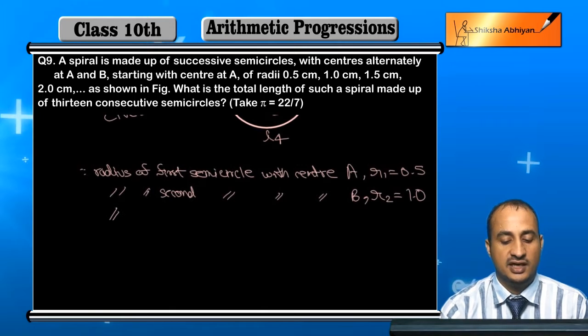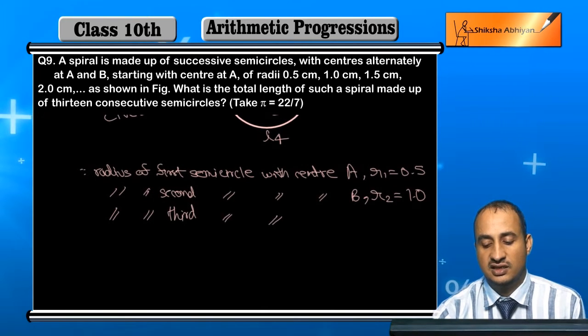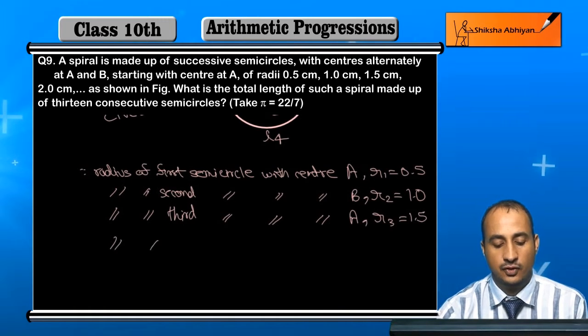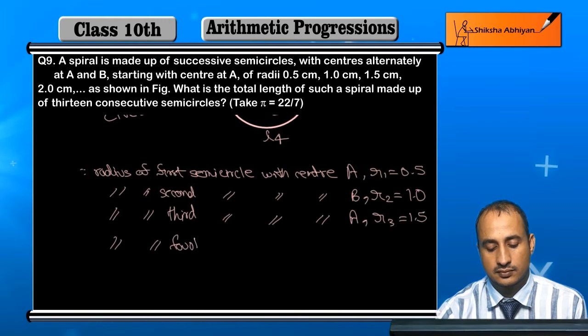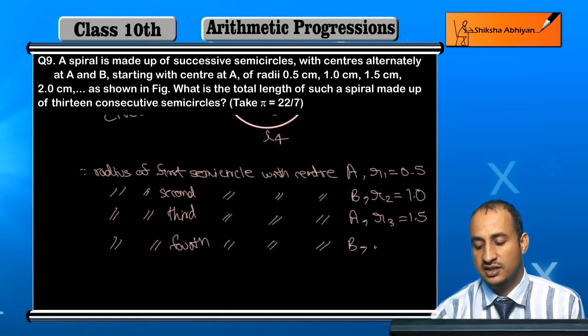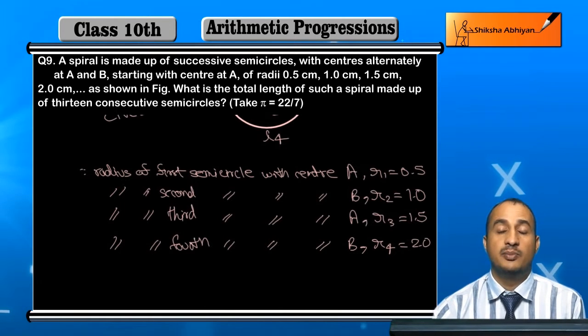And similarly, the radius of the third semicircle with center A again, what is it? R3, which is 1.5. And the fourth one, which is center B, this is R4, which is 2.0.